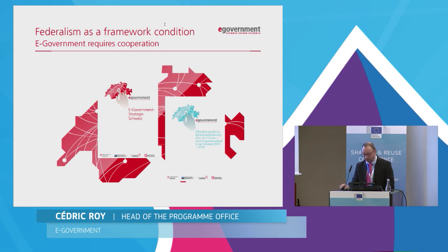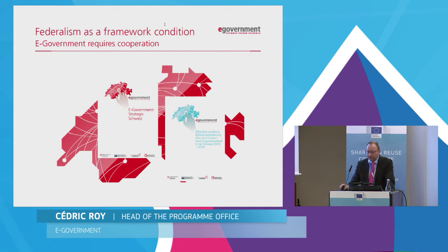The implementation of the strategy is based on a public law framework agreement on e-government cooperation, which has been signed by the federal council and the conference of cantonal governments. The agreement defines the organization of the cooperation, the tasks and responsibilities of each entity, and an annual cost ceiling of 5 million Swiss francs for the activities.